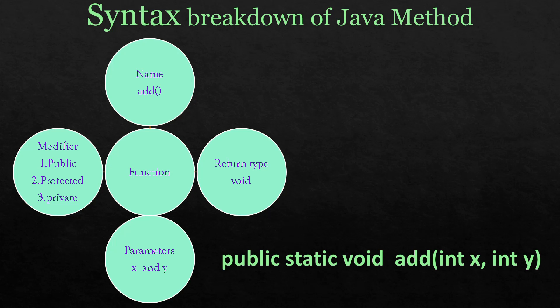The method signature comprises only the method name and the parameter list together — it does not include the return type or exceptions such as throws IOException. When we create a function, it always has the method name, followed by the method body within curly braces, where we write the definition of the function.